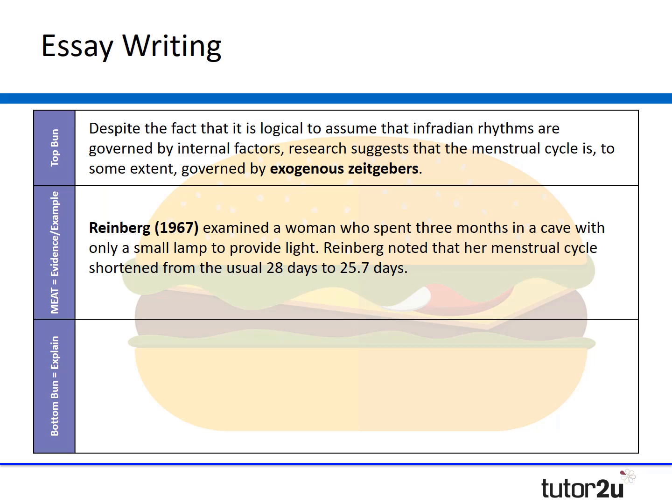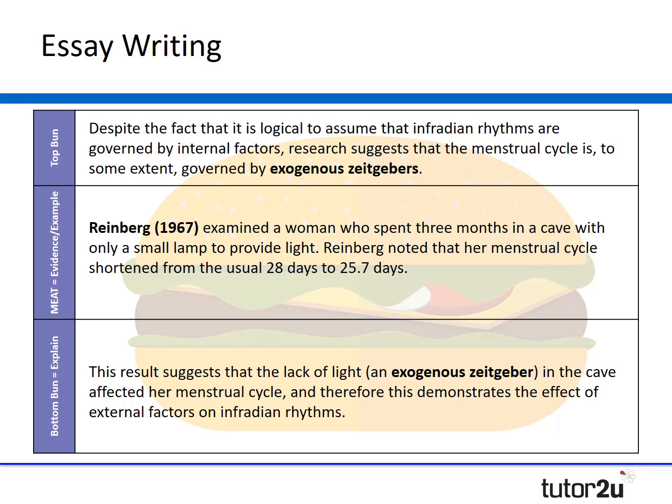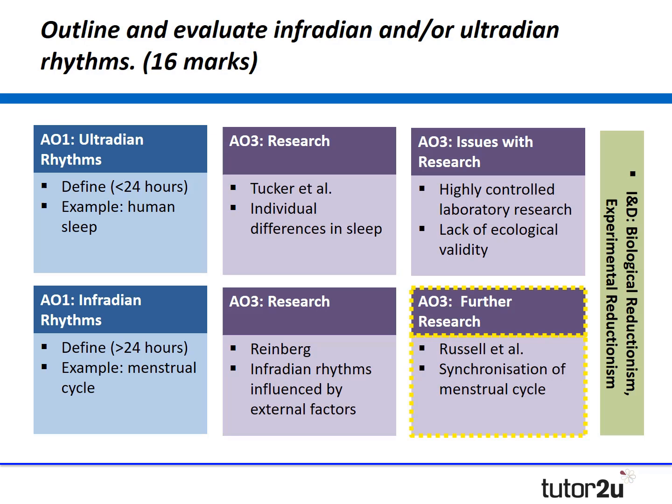Reinberg examined a woman who spent three months in a cave with only a small lamp to provide light. Reinberg noted that her menstrual cycle shortened from the usual 28 days to 25.7 days. These results suggest that the lack of light — which is an exogenous zeitgeber — in the cave affected her menstrual cycle, and this demonstrates the effect of external factors on infradian rhythms.